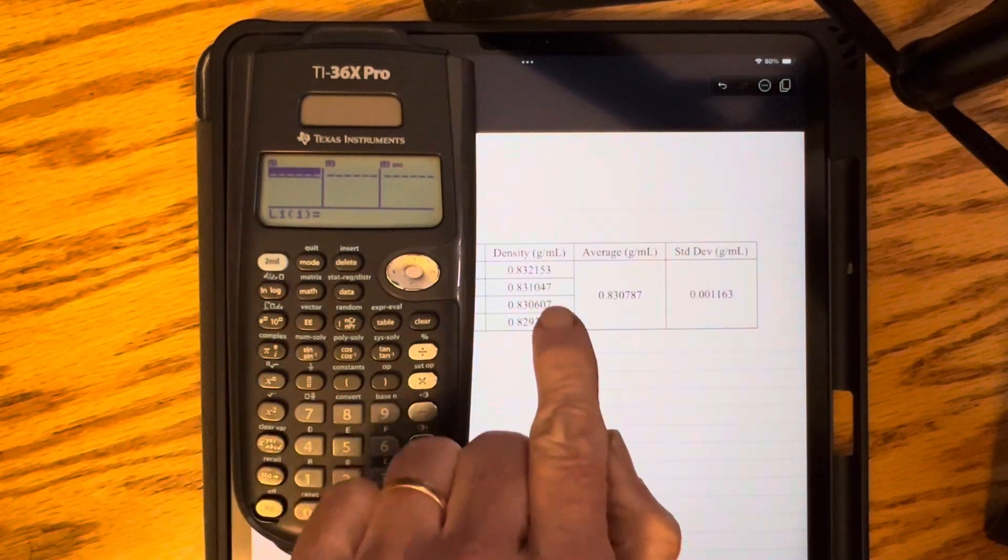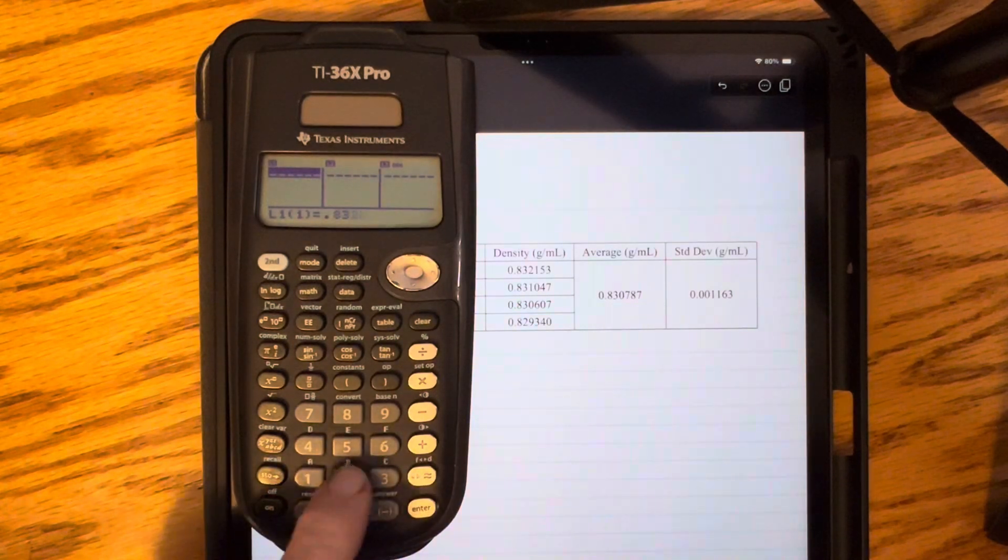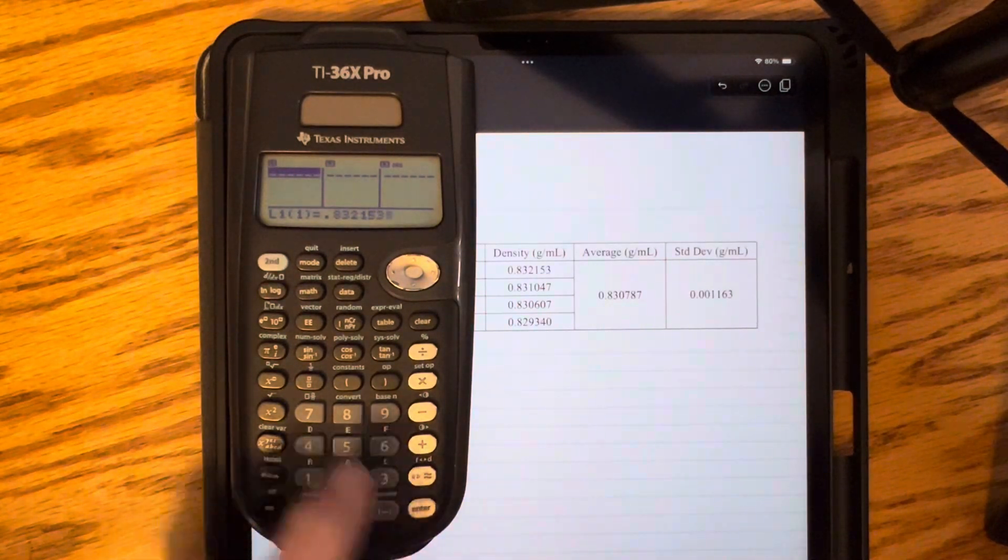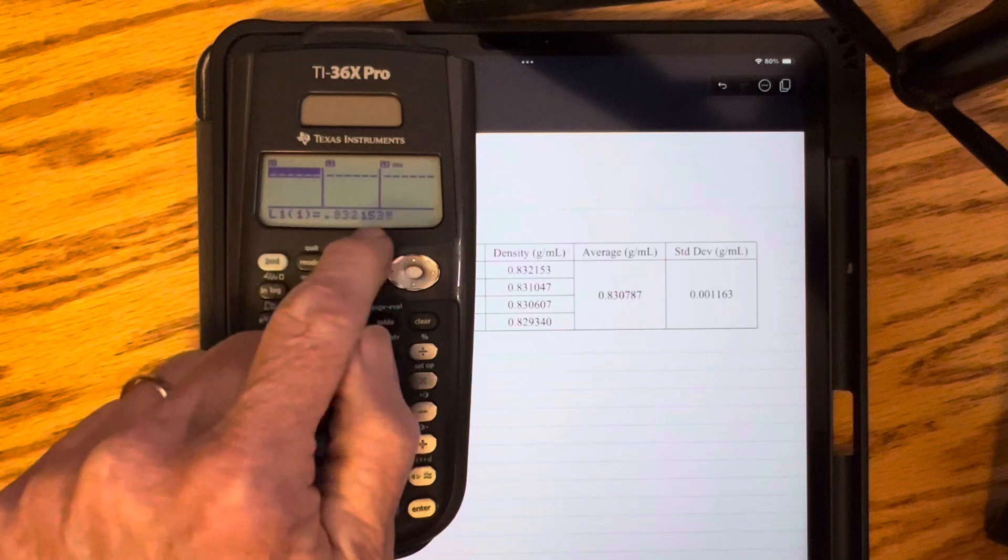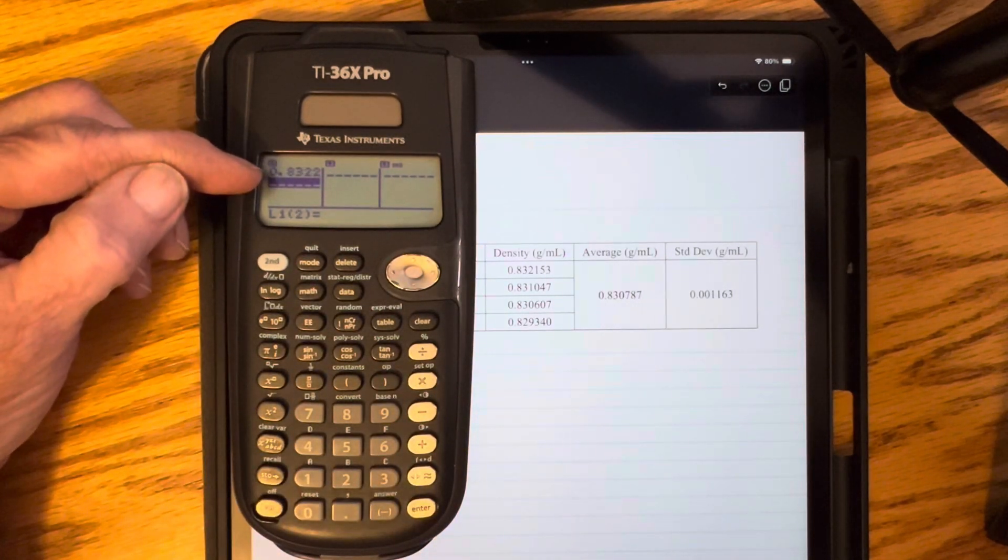Now I'm just going to type in the numbers as they appear here, so 0.832153. It's showing what I'm typing down here. When I press Enter, it looks like that number has been rounded.